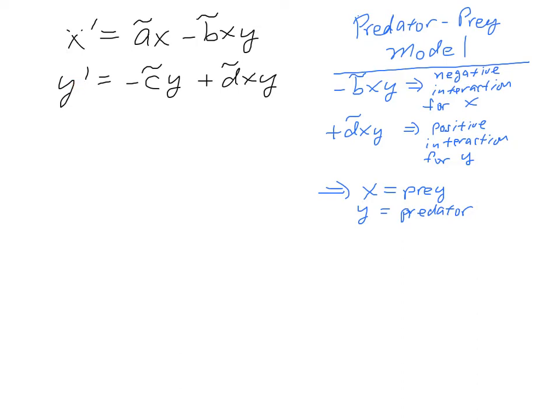And then Y, without this interaction term, would have exponential decay, but then it would have a positive interaction with X with respect to its change. So, just knowing that, if X has a negative interaction with Y and Y has a positive interaction with X, then we expect X to model the prey and Y to model the predator. Because the predator has a positive interaction with the prey, whereas the prey has a negative interaction with the predator.